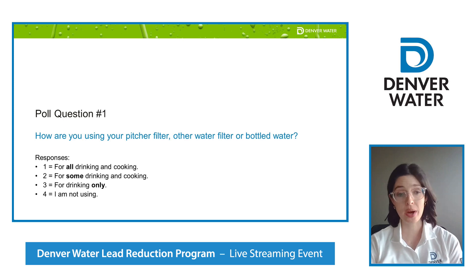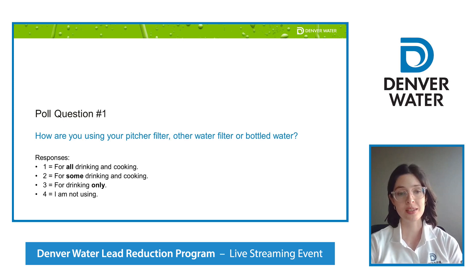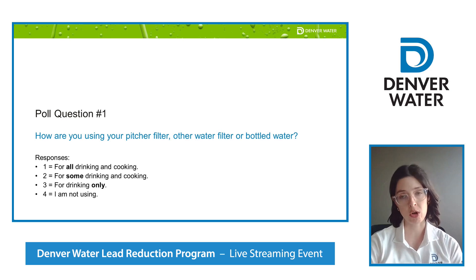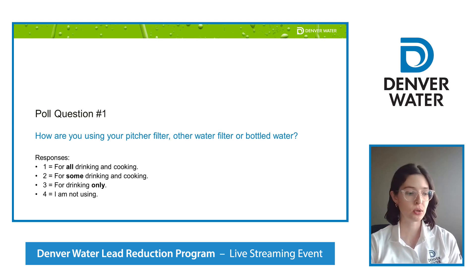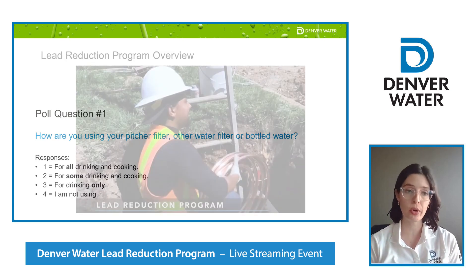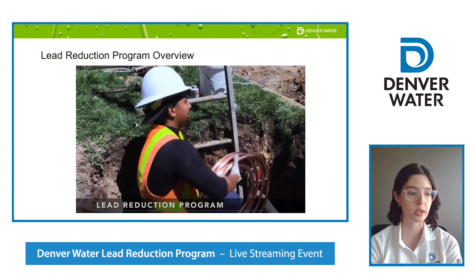We can see responses coming in. It looks like 47 percent are using filtered water for all their drinking and cooking needs — which is awesome. We've got another good percentage using it for some drinking and cooking and for drinking only. About 41 percent say they're using it for all drinking and cooking. The cooking piece is probably the hardest one for folks and we're going to be talking about that a lot tonight.